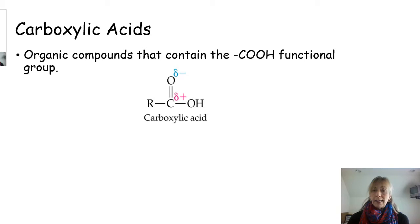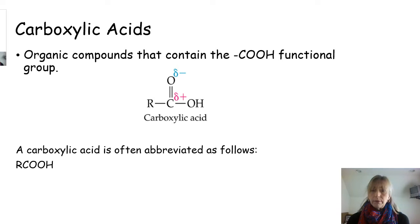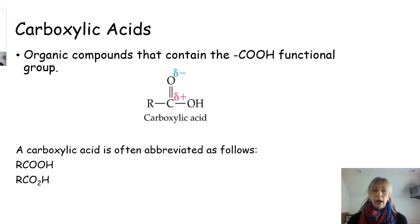The carboxylic acid, when abbreviated or condensed down, is written as R-C-O-O-H in that order from left to right. Sometimes they combine those two oxygens, so it would be R-C-O₂H. Keep that in mind as you're reading about carboxylic acid in the chapter.